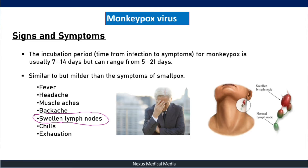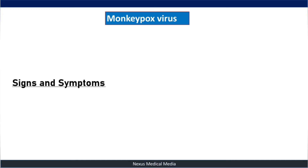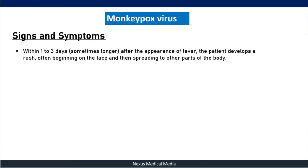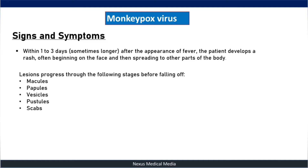The swollen lymph nodes — lymphadenopathy — are important because they help differentiate monkeypox from smallpox. Monkeypox causes lymphadenopathy while smallpox does not. Within one to three days after the appearance of fever, the patient develops a rash, often beginning on the face and then spreading to other parts of the body.